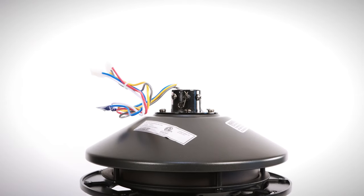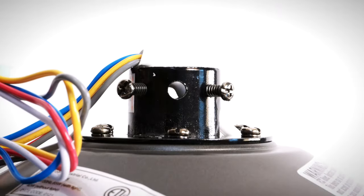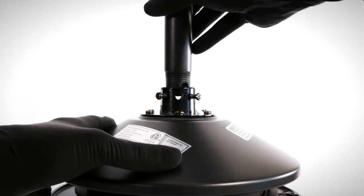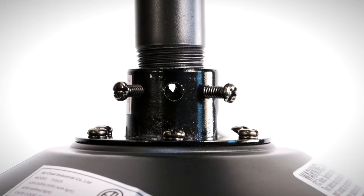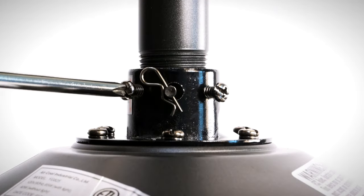On the fan motor assembly, remove the clevis pin and cotter pin. Loosen the two collar set screws. Guide the motor wires through the downrod and insert it into the collar. Align the holes then insert the clevis pin and cotter pin. Tighten the two collar set screws.